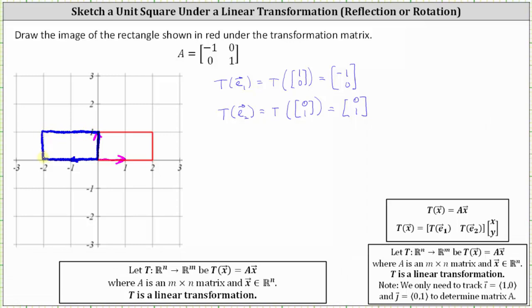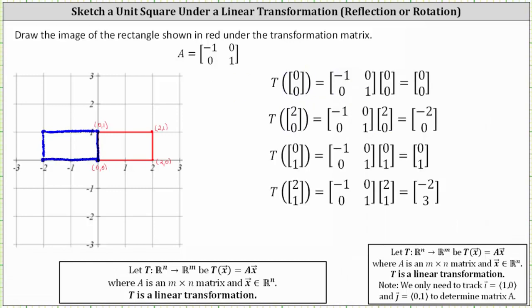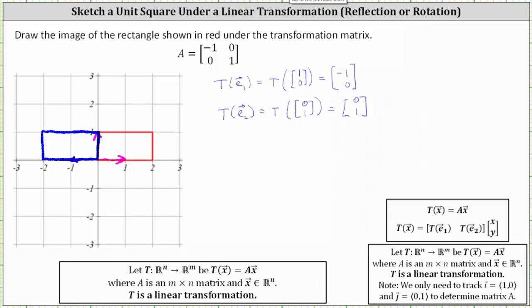This blue rectangle is the transformation of the red rectangle under the transformation matrix A. Notice that regardless of which method we take, we get the same transformed rectangle. I hope you found this helpful.